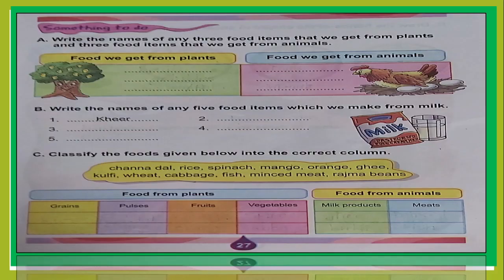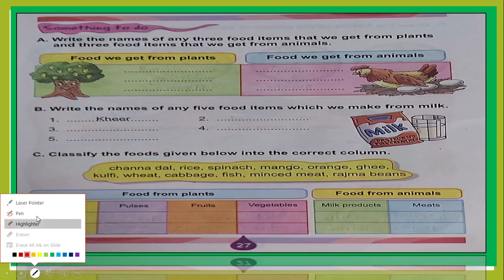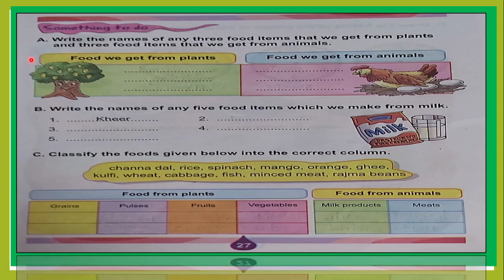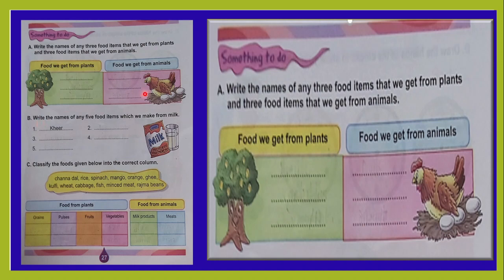First, take out your book, page number 27. This is your page. You have to write down the date. You can write CW here. First we will solve exercise A, then B. We will do it later. Today we are going to solve only exercise A and B. So, are you ready? Okay, so this is your exercise A.